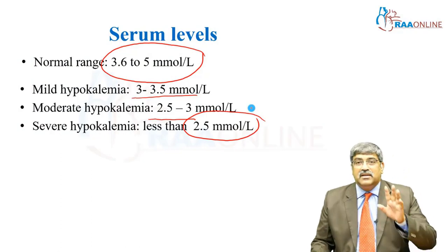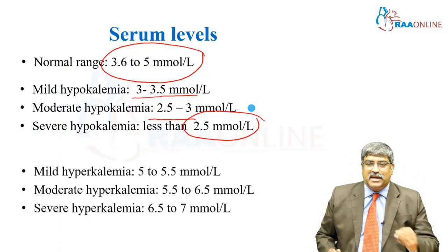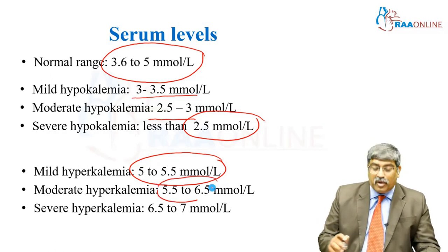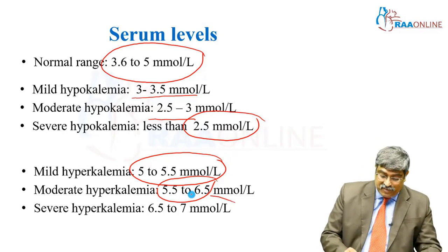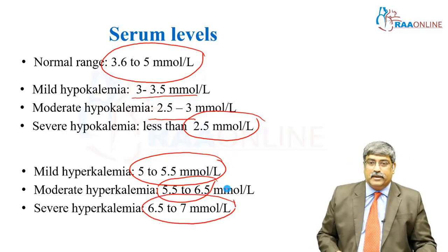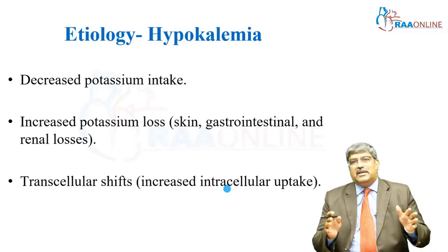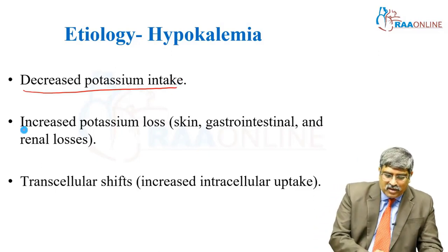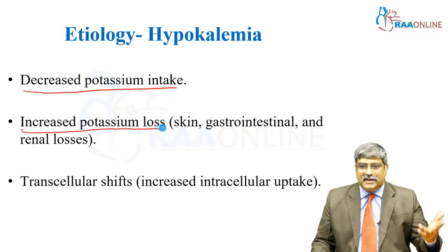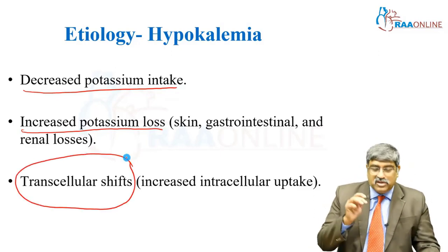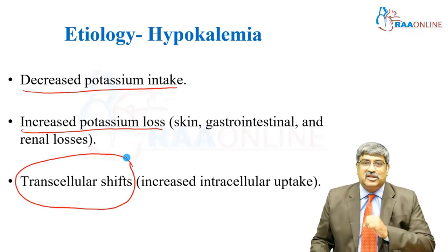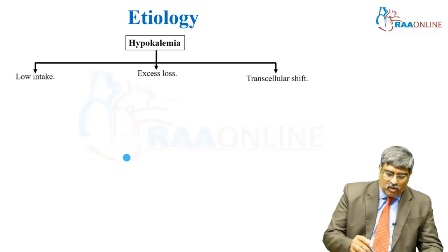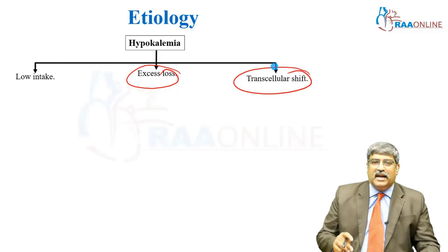If potassium is less than 2.5 millimoles per liter, it is severe hypokalemia. For hyperkalemia: mild is 5 to 5.5 millimoles per liter, moderate is 5.5 to 6.5, and severe is 6.5 to 7 millimoles per liter. Coming to hypokalemia, the causes include very low dietary potassium intake, increased potassium loss via renal or extra-renal routes, and transcellular shift — also called intracellular uptake. The etiology thus falls into three categories: low intake, increased loss, or transcellular shift.